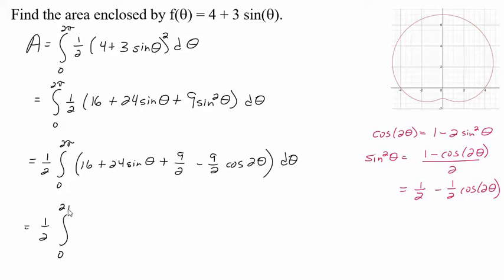Okay, well we could combine these constants together; guess we might as well do that, and then we can finally get to our integration. Let's see, 16 plus 9 halves, that's four and a half, so be 20 and a half. You could write that as 41 halves I guess, and 24 sine theta minus 9 halves cosine 2 theta. Should put that in parentheses also. Okay, let's do some integration here.